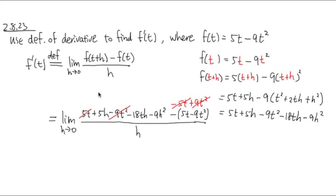They all have an h. So let's factor out an h. So here I will have 5, and I will have negative 18t, the h is out already, minus 9, and I have just 1h to the first power left.